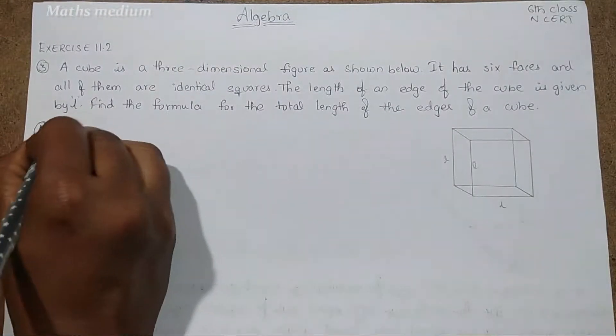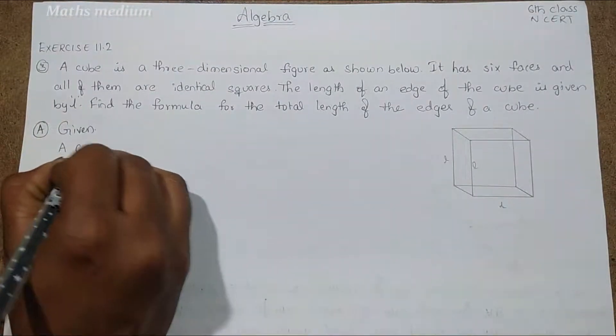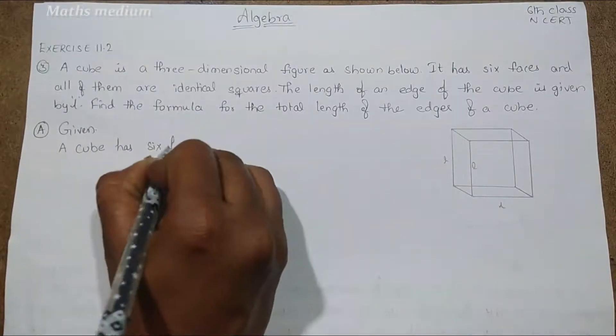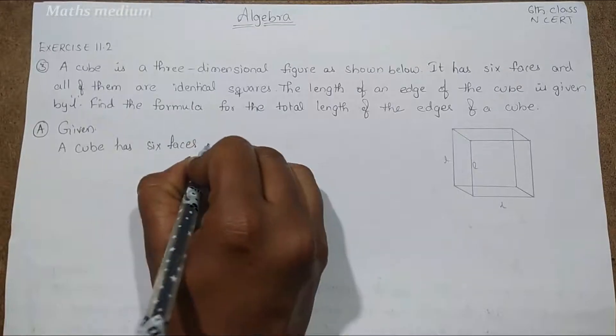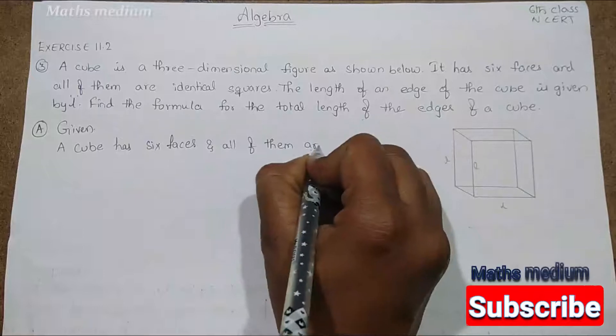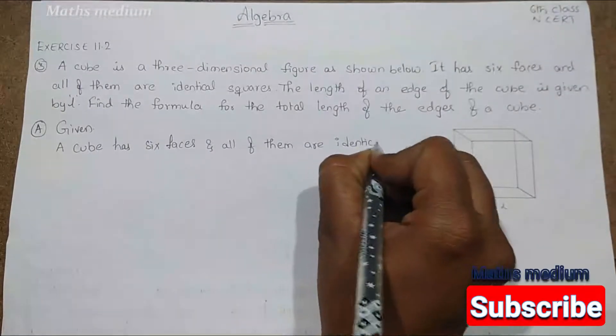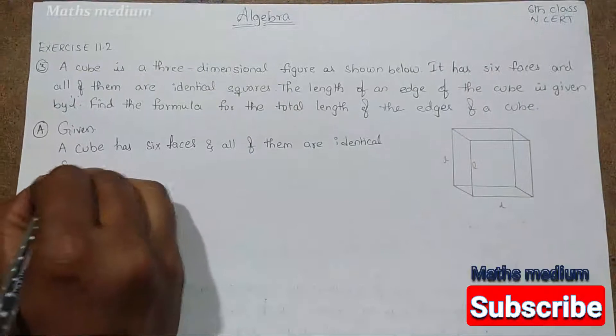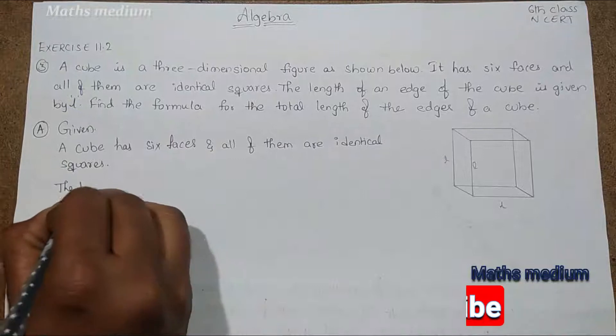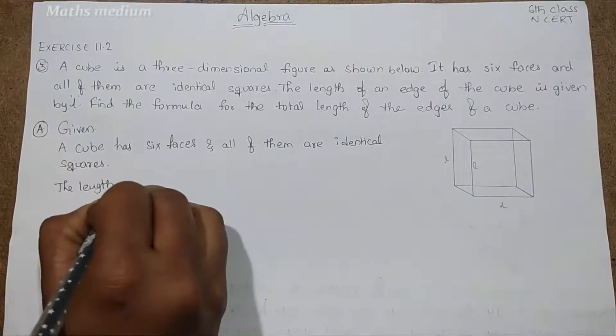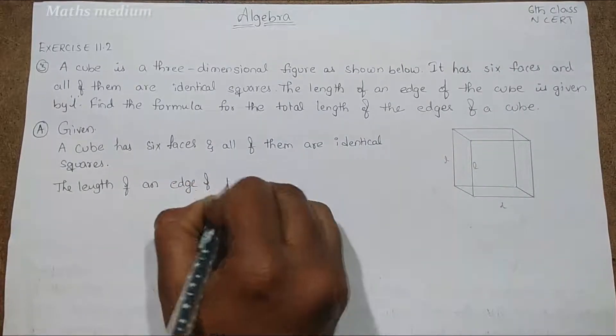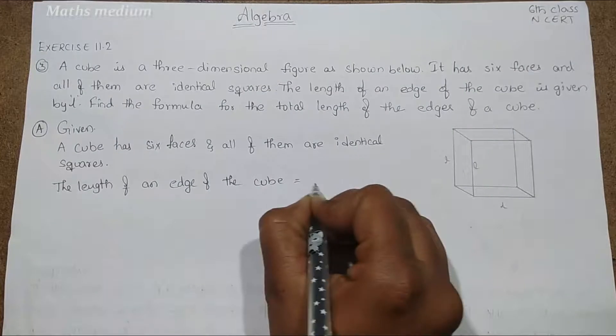Given: a cube has six faces and all of them are identical squares. The length of an edge of the cube is equal to L.